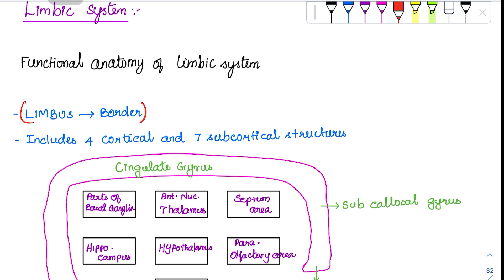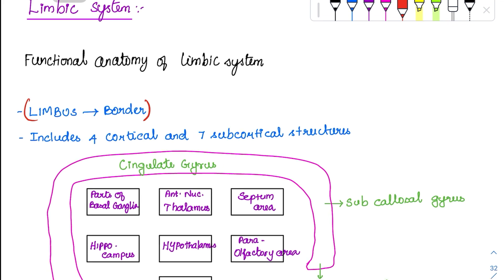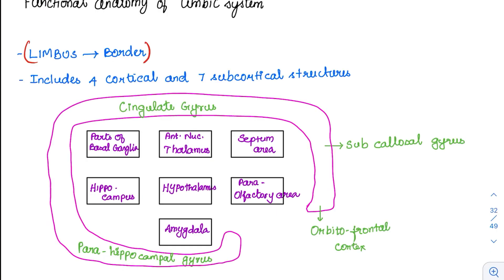Later on, they identified that the limbic system is the one which is involved in emotion and behavior. If something is involved in emotions and behavior and they are functioning as a single circuit, then that is called the limbic system. So all the nuclei involved in this process are included in the limbic system.